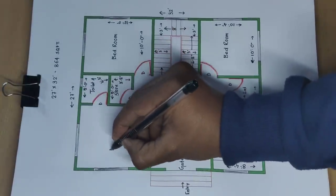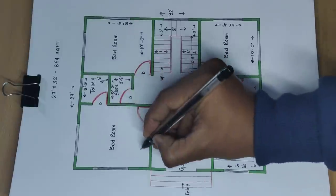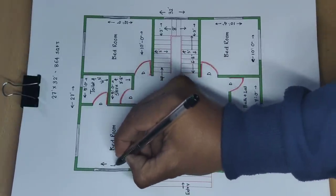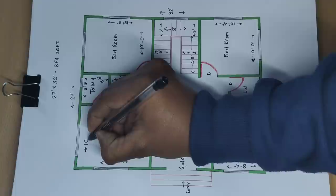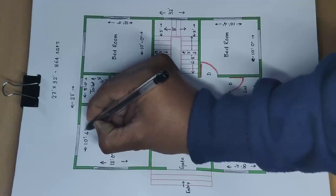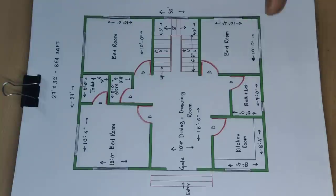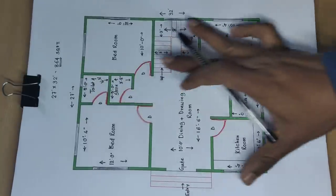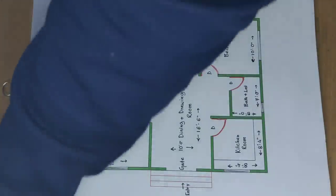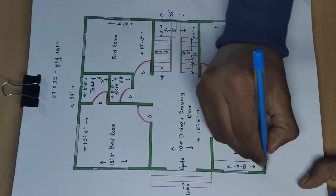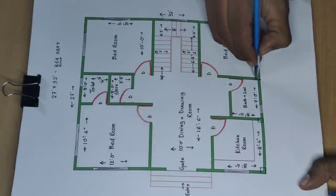This is the third bedroom — distance 12 feet this side and 10 feet 4 inches this side. This is an 864 square feet 3BHK house plan. Now we start the column positions.